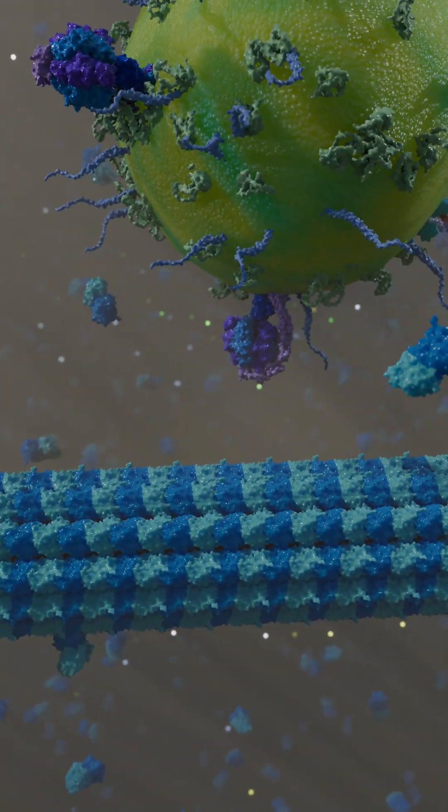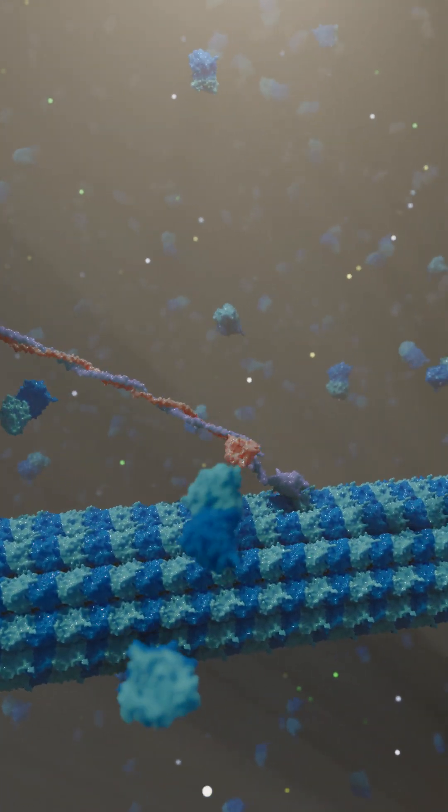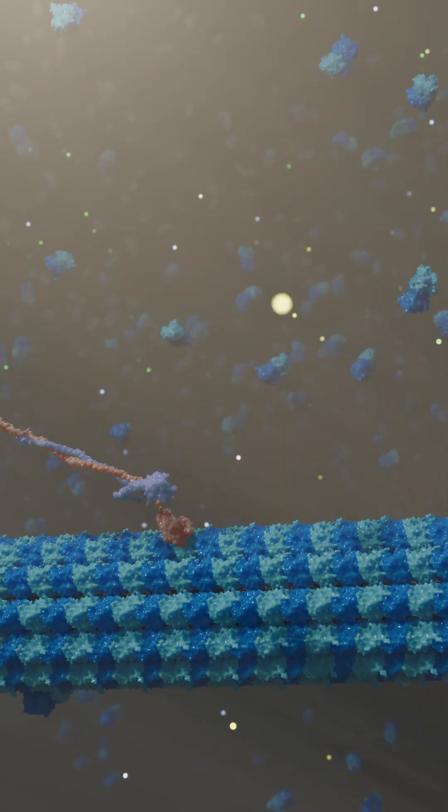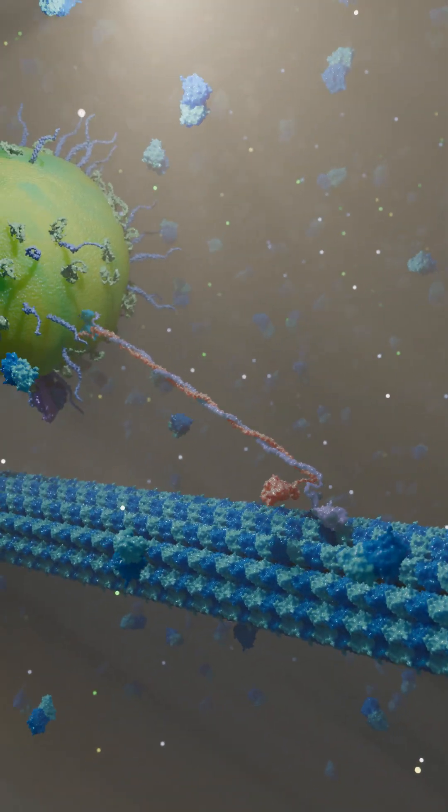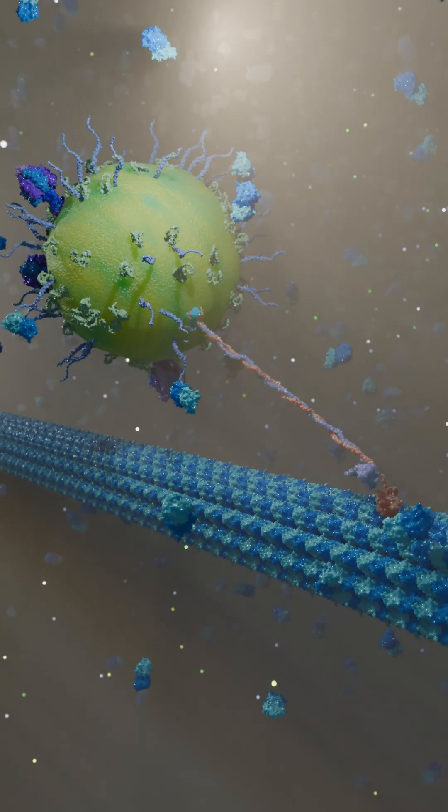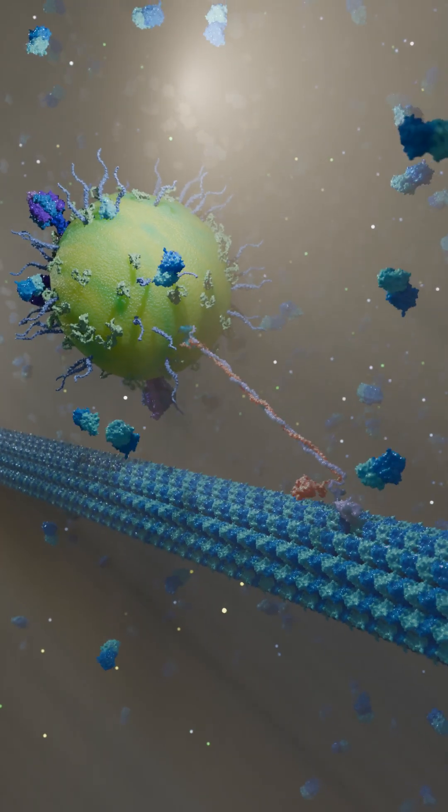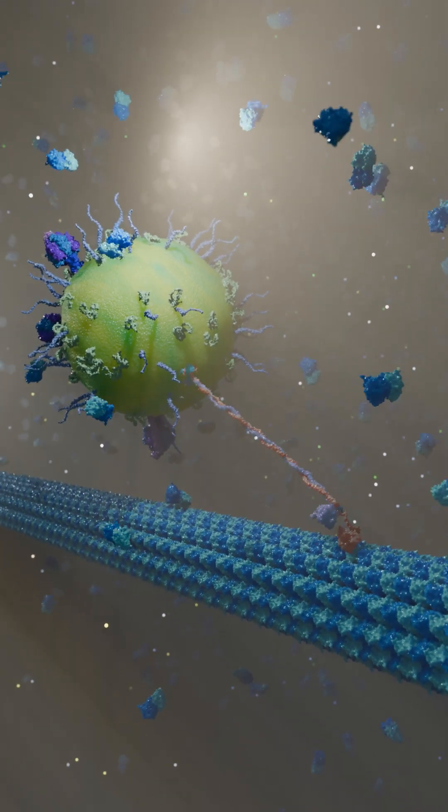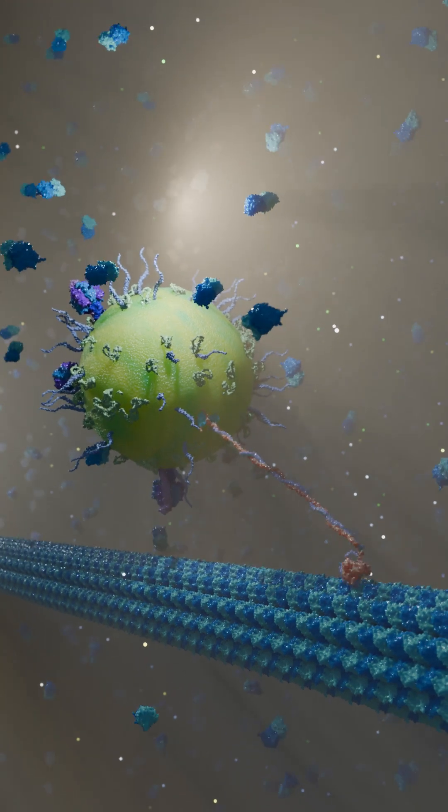Microtubules have many functions like maintaining cell shape, serving as tracks for motor protein-driven intracellular transport, forming the mitotic spindle for chromosome separation, and constituting the core structure of cilia and flagella for cell motility.